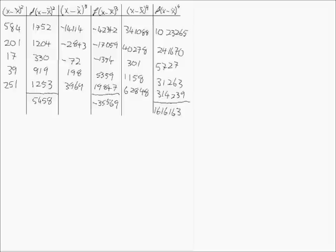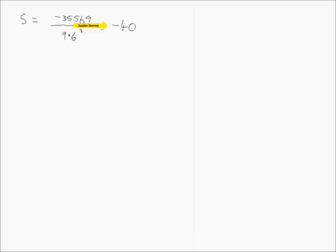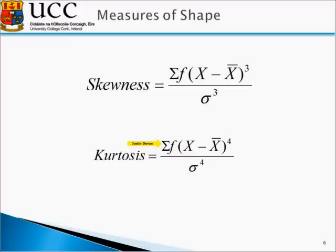We have now calculated the top value for our kurtosis measure. So kurtosis is given as the value of 1,616,163 all over our standard deviation of 9.6 to the power of 4, resulting in a value of 1.88. Wait — as this value is greater than 3, we can say that it is relatively peaked. So we have now calculated our skewness and kurtosis measures. That concludes this tutorial.